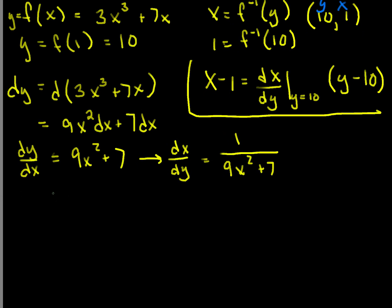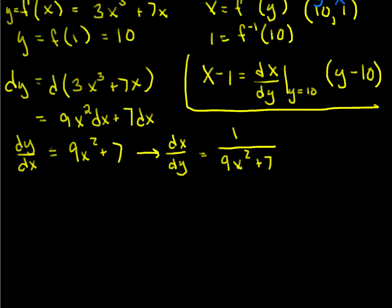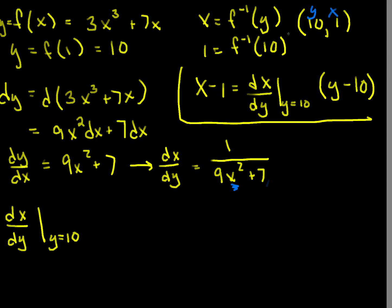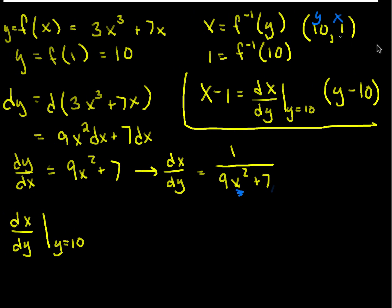So then dx/dy, when y is 10, well, we've got a problem, because in my equation, I don't have any y's. And that happens quite often with inverses. I only have x values. But I know when y equals 10, back here, my relationship, when y is 10, x is 1. So derivative of x with respect to y when y equals 10 is the same as the derivative of x with respect to y when x is 1. Which is equal to 1 over 16.